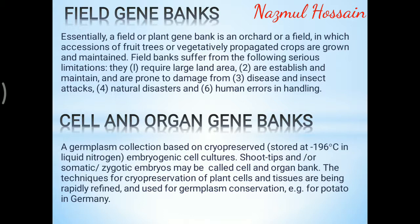Field gene banks: essentially, a field or plant gene bank is an orchard or a field in which accessions of fruit trees or vegetatively propagated crops are grown and maintained. Field banks suffer from the following serious limitations: they require large land area, are expensive to establish and maintain, and are prone to damage from disease, insect attacks, natural disasters, and human errors. Cell and organ gene banks: a germplasm collection based on cryopreserved embryonic cell cultures, shoot tips, or somatic or zygotic embryos may be called a cell or organ bank.